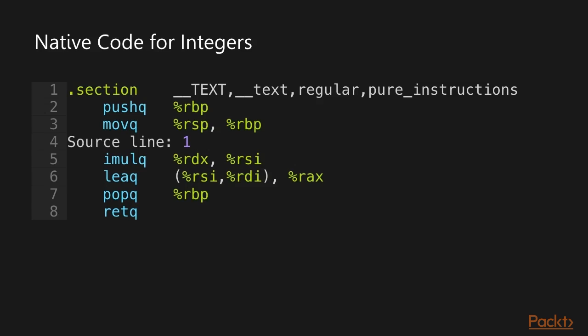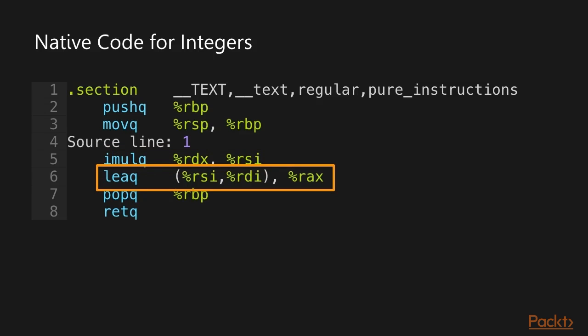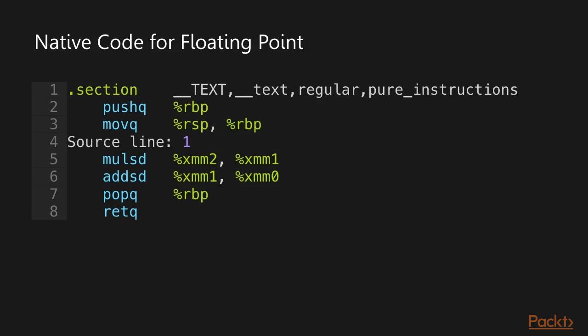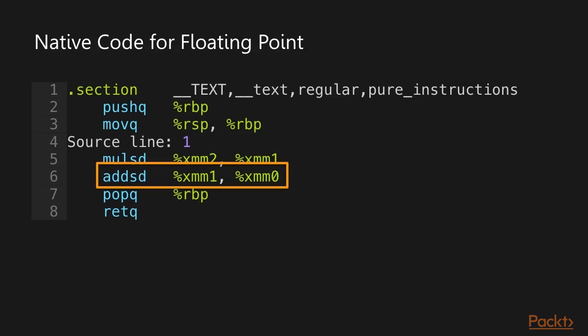This then turns into actual machine code — x86 assembly — where we have real registers like `rdx` and `rsi` being multiplied. The add looks a bit funny because it uses `lea` (load effective address), which adds addresses but since addresses are just integers, it works for integer addition. For the floating-point version we use entirely different instructions like `mulsd` (multiply scalar double) and `addsd` (add scalar double), using different registers.